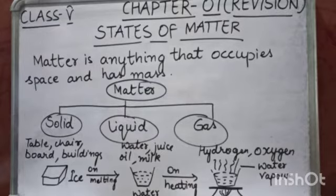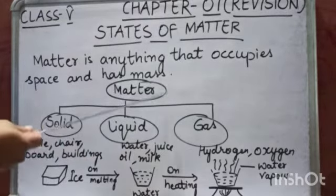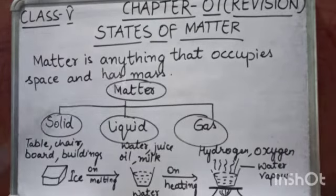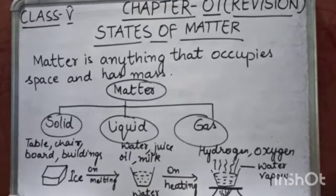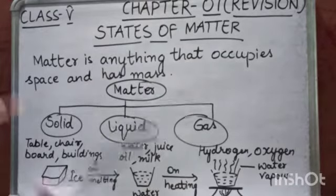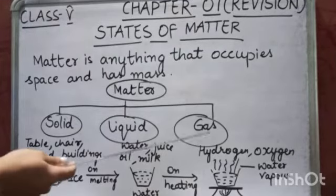Solid — for example, scale, blackboard, table, chair, wall — these are all examples of solids. And water, juice, milk, oil — all these are examples of liquids. And water vapour, hydrogen, oxygen — they all are examples of gases.